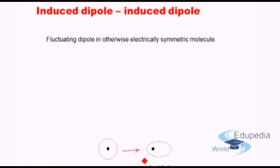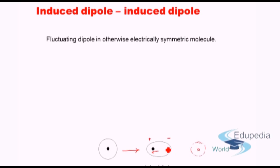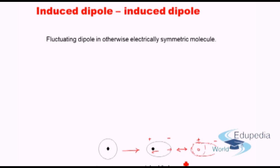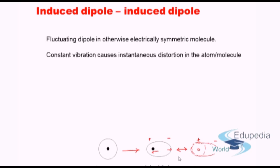A symmetric atom momentarily transforms into an induced dipole. As shown here, the positive charge shifts off-center and the negative charge moves the other way, so effectively we have a plus on one side and a minus on the other — a dipole is created. This momentary creation of a dipole will then induce a dipole in the adjacent molecule too. A similar distortion occurs in a neighboring symmetric atom, making one side positive and the other negative. This induced dipole to induced dipole combination produces an interaction — a secondary bond.